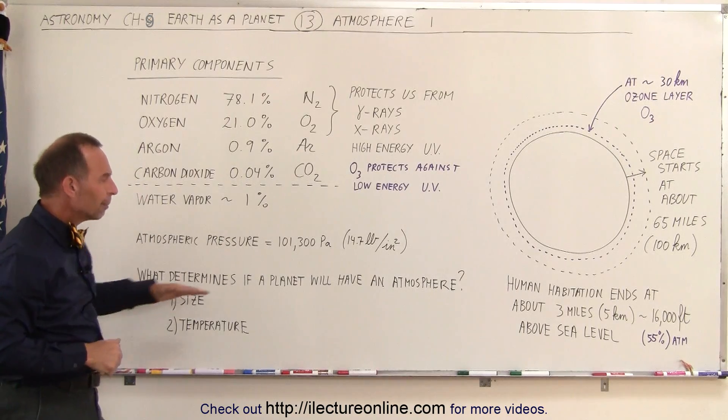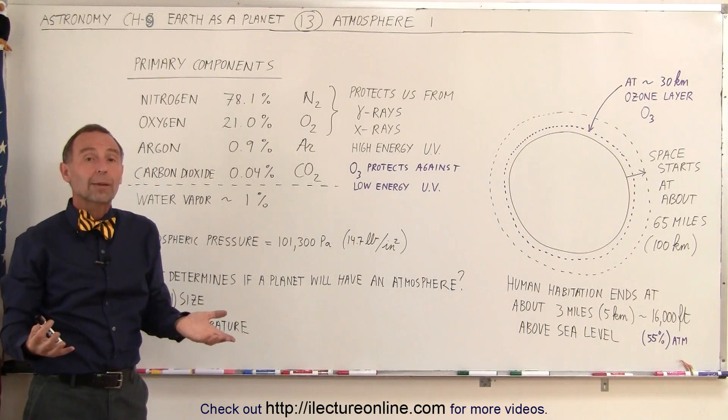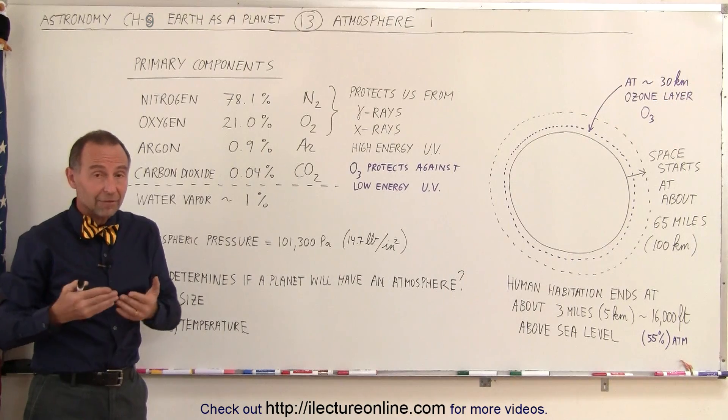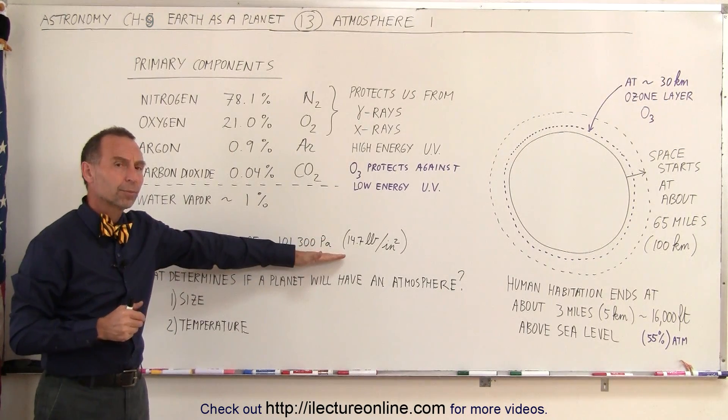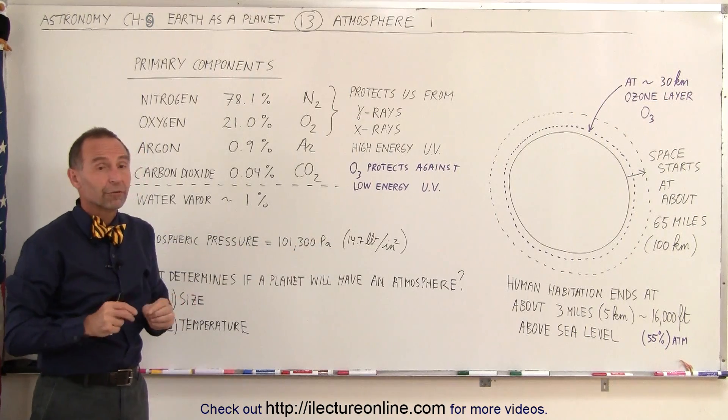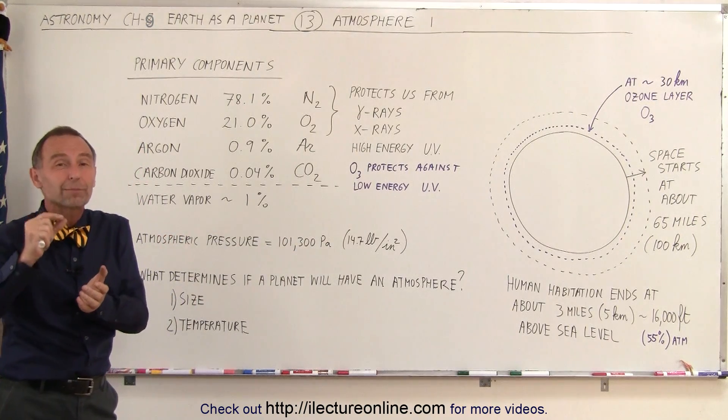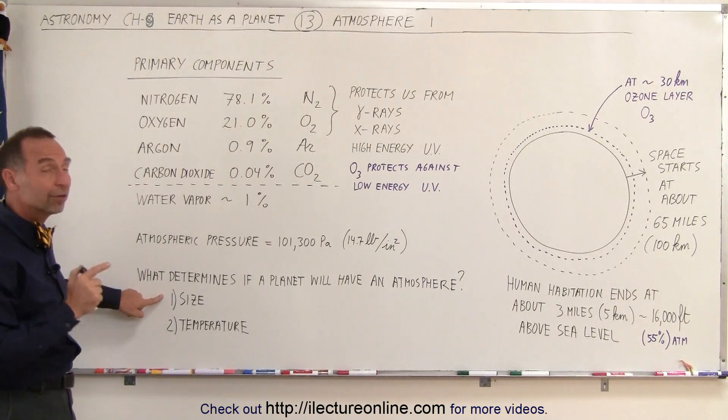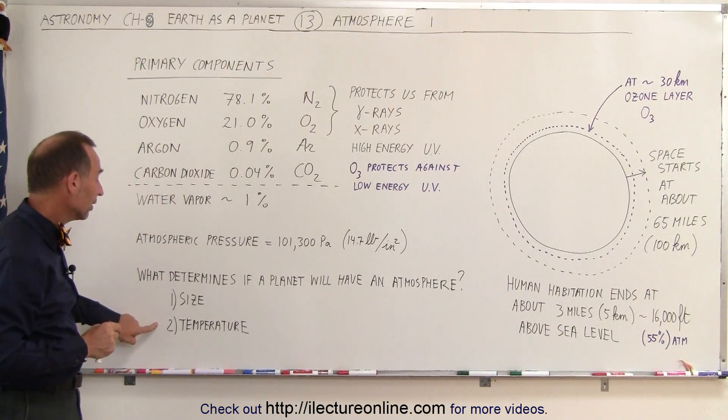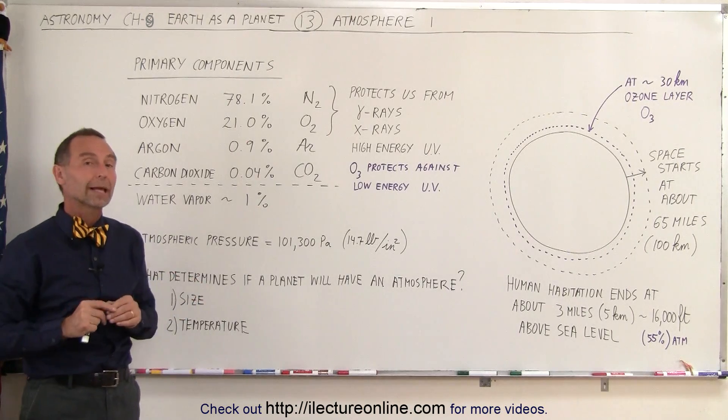What determines if a planet actually does end up with an atmosphere? For example, why does the Earth have a very thick atmosphere with 14.7 pounds per square inch of atmospheric pressure, versus Mars having less than 1% of Earth's atmospheric pressure? There's two factors here. One of them is size, and the other one is the temperature on the surface of the planet.